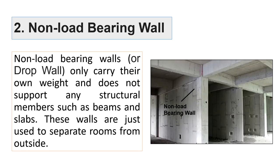The second type is non-load bearing walls. These walls do not support the load above them, such as beams and slabs. These walls are mainly seen in framed structures — structures which have beams, columns, and slabs — and those three members are responsible for bearing the total load of the building. The purpose of these walls is to separate rooms from the outside.